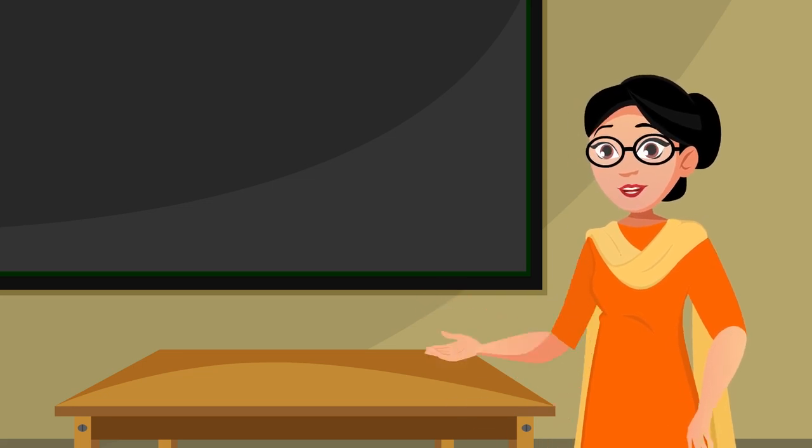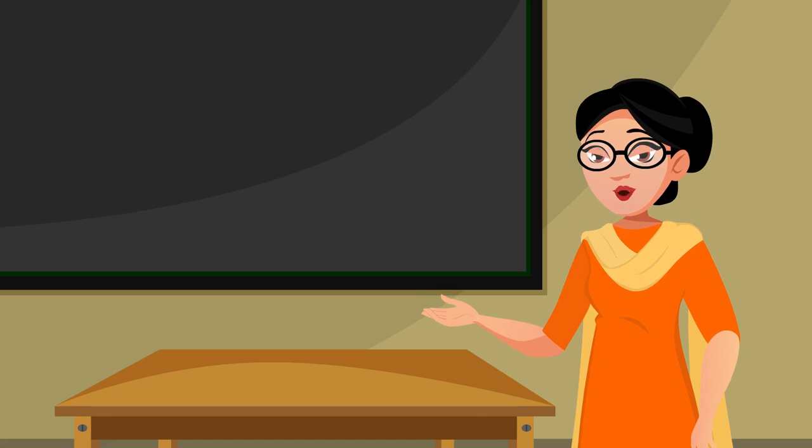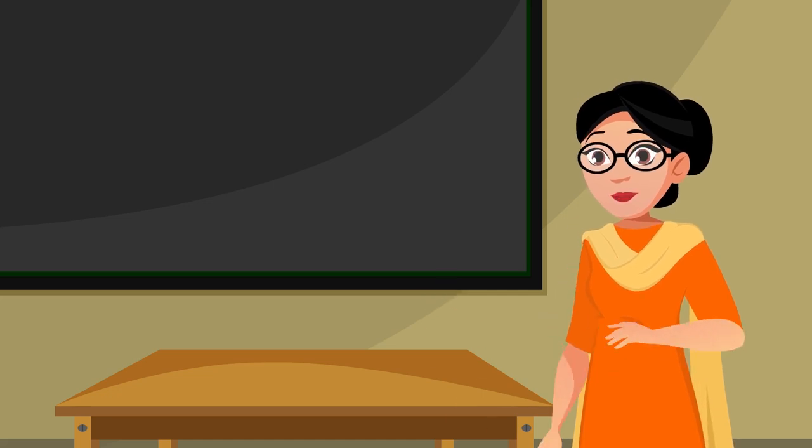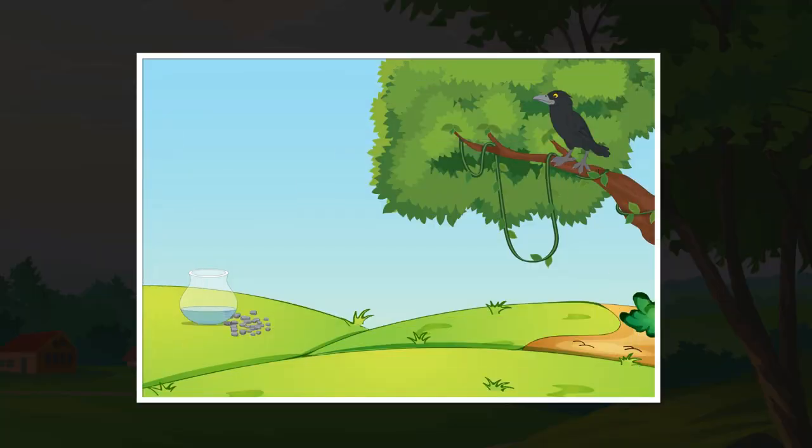Come on, let's try this. I will keep a picture in front of you and you have to narrate what's happening in it. There is a crow in this picture. The crow is thirsty.